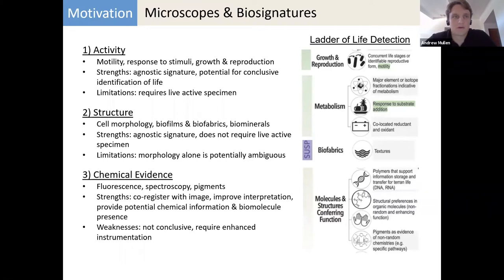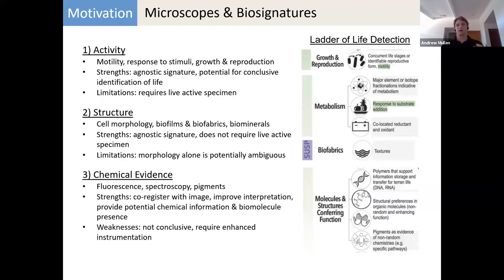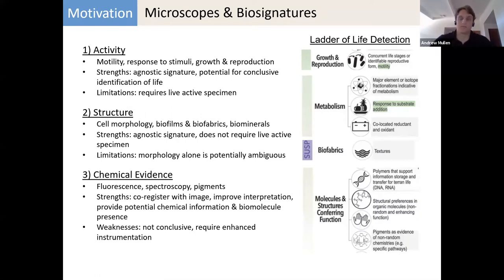What specific biosignatures can we detect with a microscope? First is activity — this would be really powerful because it's a potentially conclusive sign for life. Specifically motility, swimming, or response to stimuli such as chemical, electric, or light. You can also look at structure: cell morphology, biofilms, biofabrics, biomaterials. Microscopic imaging can fall at multiple levels on the ladder of life detection. Additionally, combining normal optical microscopy with fluorescence, Raman, or holography can also provide material properties such as index of refraction — so imaging can provide chemical evidence as well.